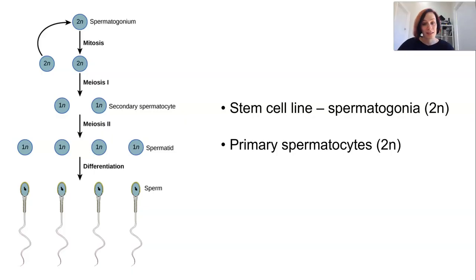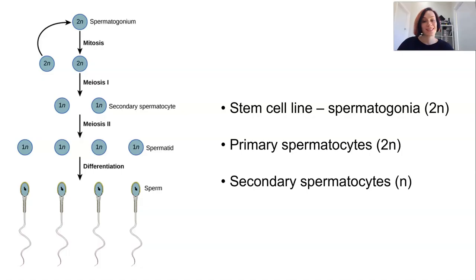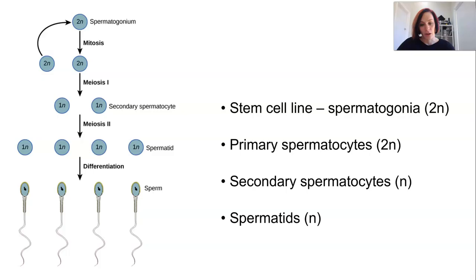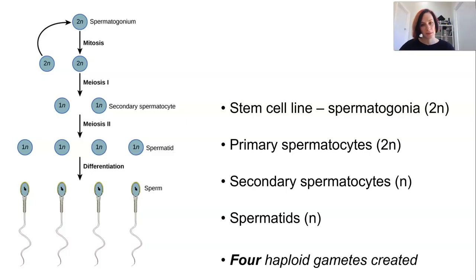Once the primary spermatocytes undergo their first stage of meiosis and become haploid, they are known as secondary spermatocytes. They finish their second meiotic division and are now called spermatids, which eventually mature and differentiate into sperm. It takes one diploid spermatocyte initially to create four haploid sperm at the end of the process.